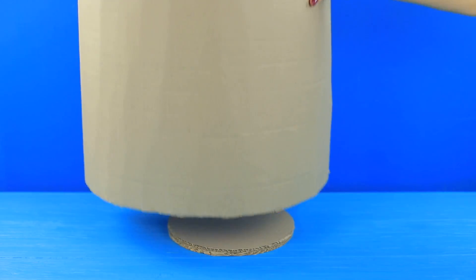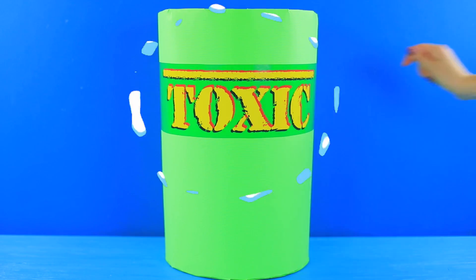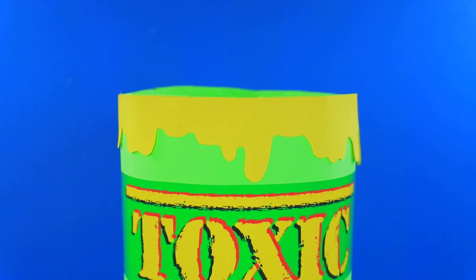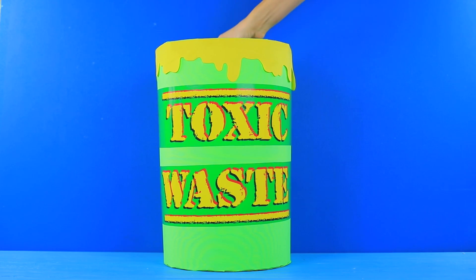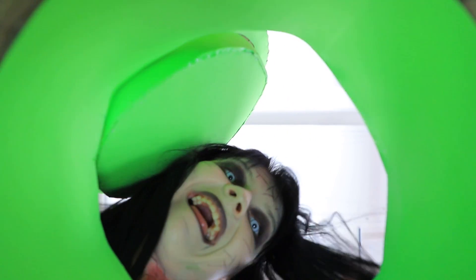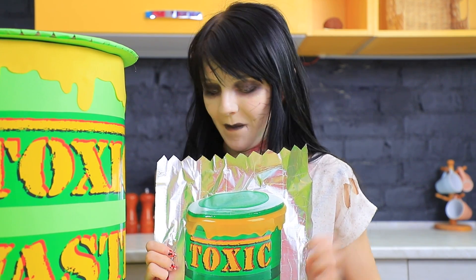Make a barrel out of thick cardboard. Wrap it in green paper. Print out a big Toxic Waste logo. Attach it to the pack. Add foam paper drips. Put in the big candy wrapped in foil. Holy bones! What a huge candy! I love it!